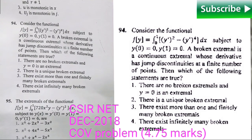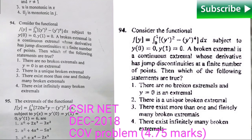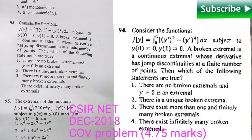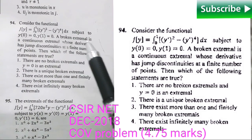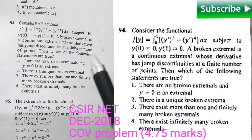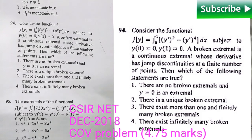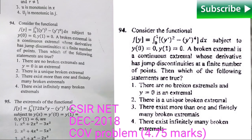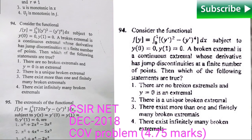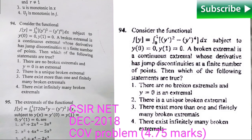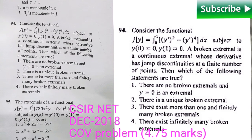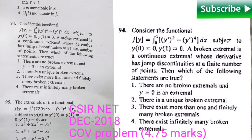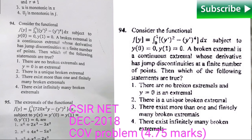Here they have given us a functional along with two boundary conditions, but observe carefully that an extra condition on the extremal is given, which says that a broken extremal is a continuous extremal whose derivative has jump discontinuities at a finite number of points. So it is not an ordinary calculus of variation problem, it is actually a mixed problem of calculus of variation and some basic concepts of real analysis.